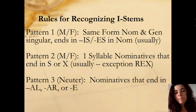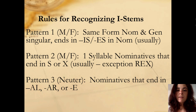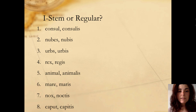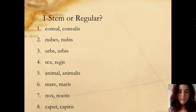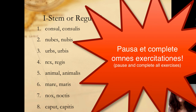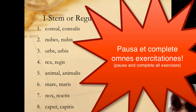Next we're going to actually practice using these rules, so make sure you have them written down. Take a look at this list of eight words — I've given you the nominative and then the genitive singular, just like you would see in a dictionary entry. Take a moment, look at the list, and write down whether each is an i-stem or regular. Pause the video, then resume to check your work.